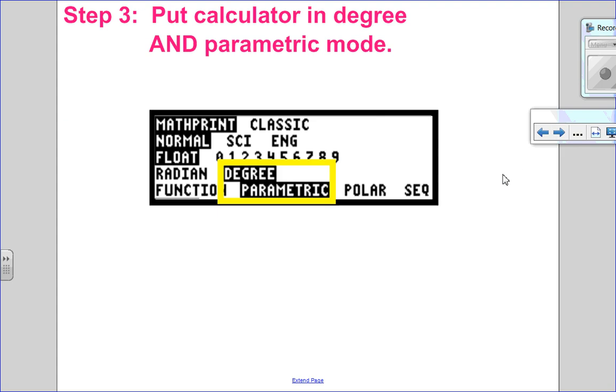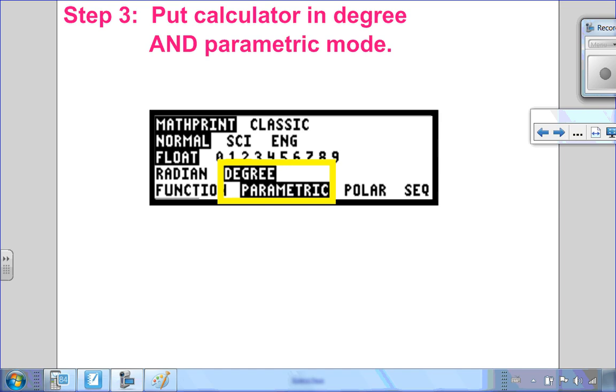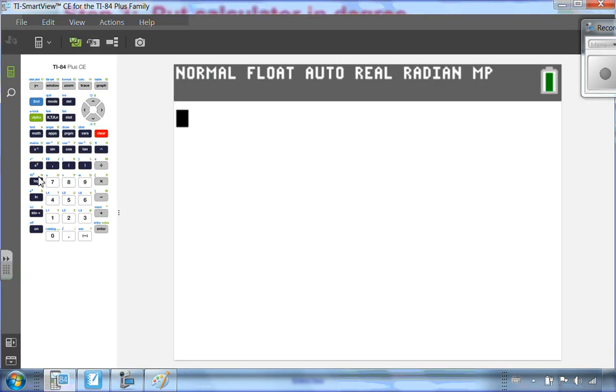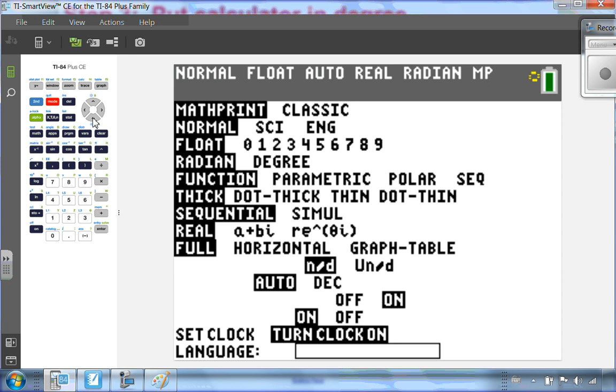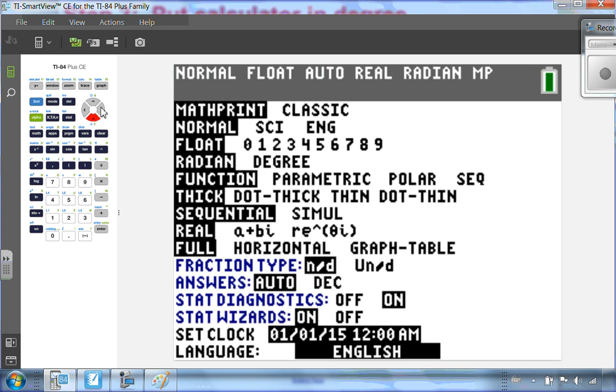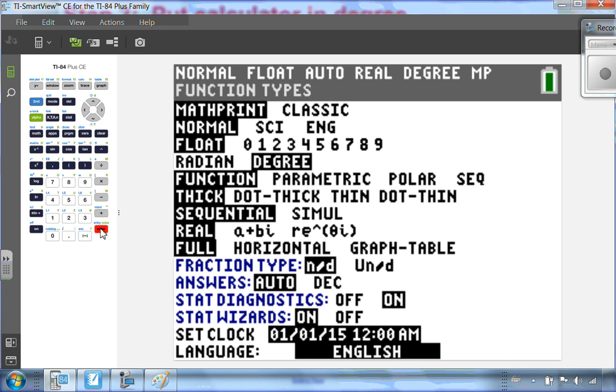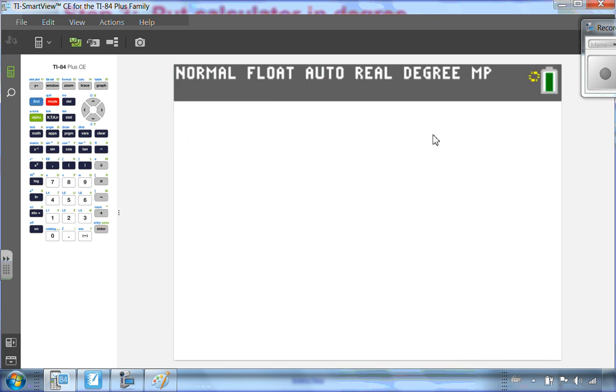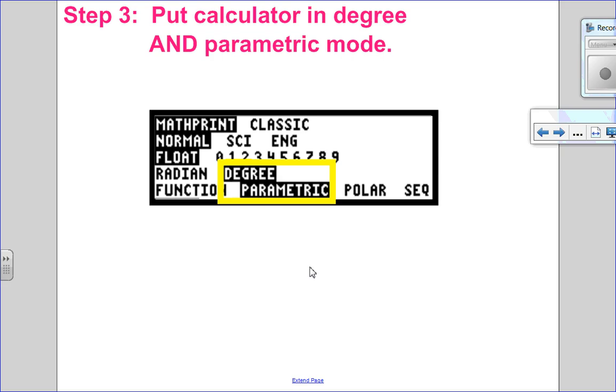So step number 3, we're going to get our calculator ready in degree mode and in parametric mode. So into my graphing calculator, I go into my mode and the first thing I want to do is make sure that I'm in degree mode. Remember when you reset your calculator, you go back to radians and then I'm going to go down. I don't want to be in function mode. I want to be in parametric mode. Okay, so out to my main screen and let's go to the next step.